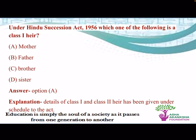Under Hindu Succession Act 1956, which one of the following is a class 1 heir? Mother is a class 1 heir, but brother and sister are not class 1 heirs. Don't get confused between brother, sister and father — mother is a class 1 heir, the others are not.